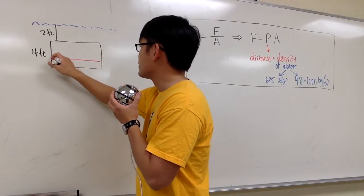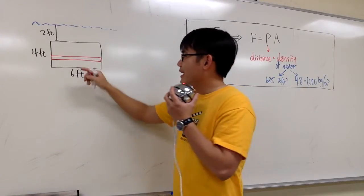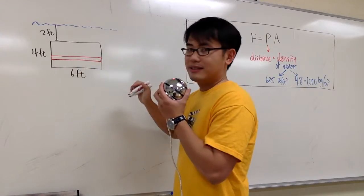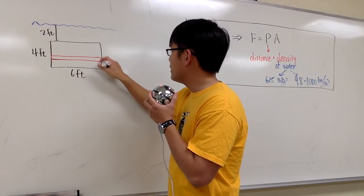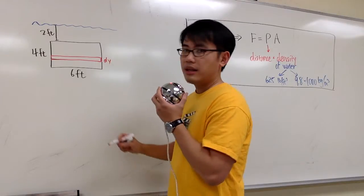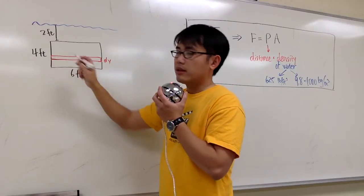I'm just going to do a horizontal slice. And we are very lucky, because this is just a rectangle. So if I make the horizontal slice, and because this is a small change in the y value, let me label this as dy, and I will need to find out the area of this rectangular slice.